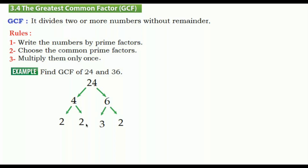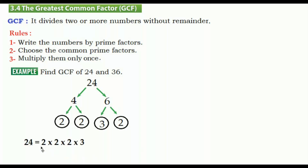You can multiply two and two to get four, and three and two to get six. Is two prime? Yes. Is three prime? Yes. Now we circle all the prime factors. So 24 equals two times two times two times three.